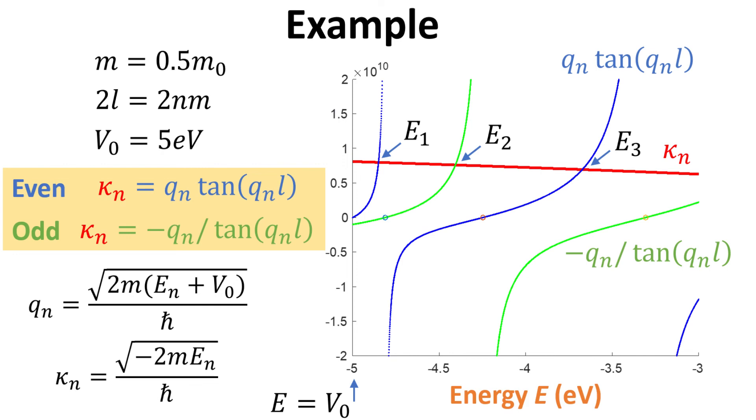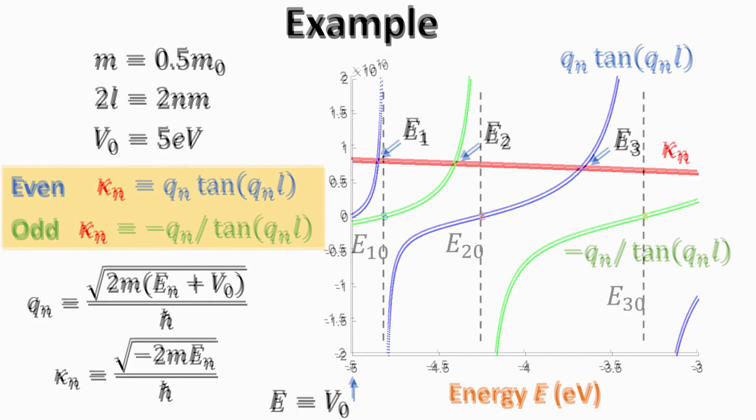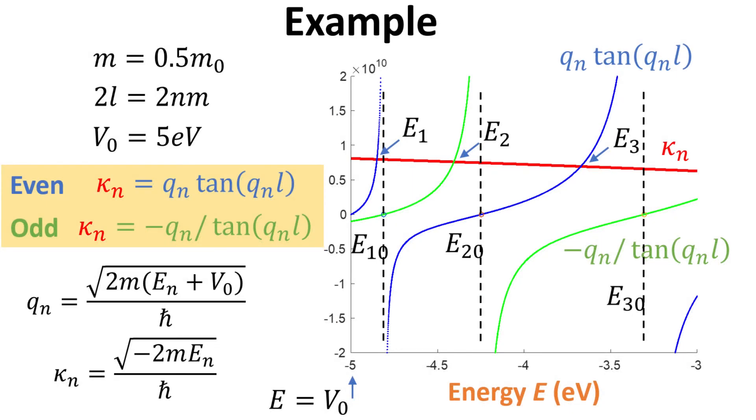How does our result compare with the infinite well case? We indicate with dashed lines the eigenenergies for the infinite well. We see that the eigenenergy for the finite well case are always smaller than the infinite well counterpart. This is not surprising since the quantum confinement effect is strongest when the potential well is infinitely deep.